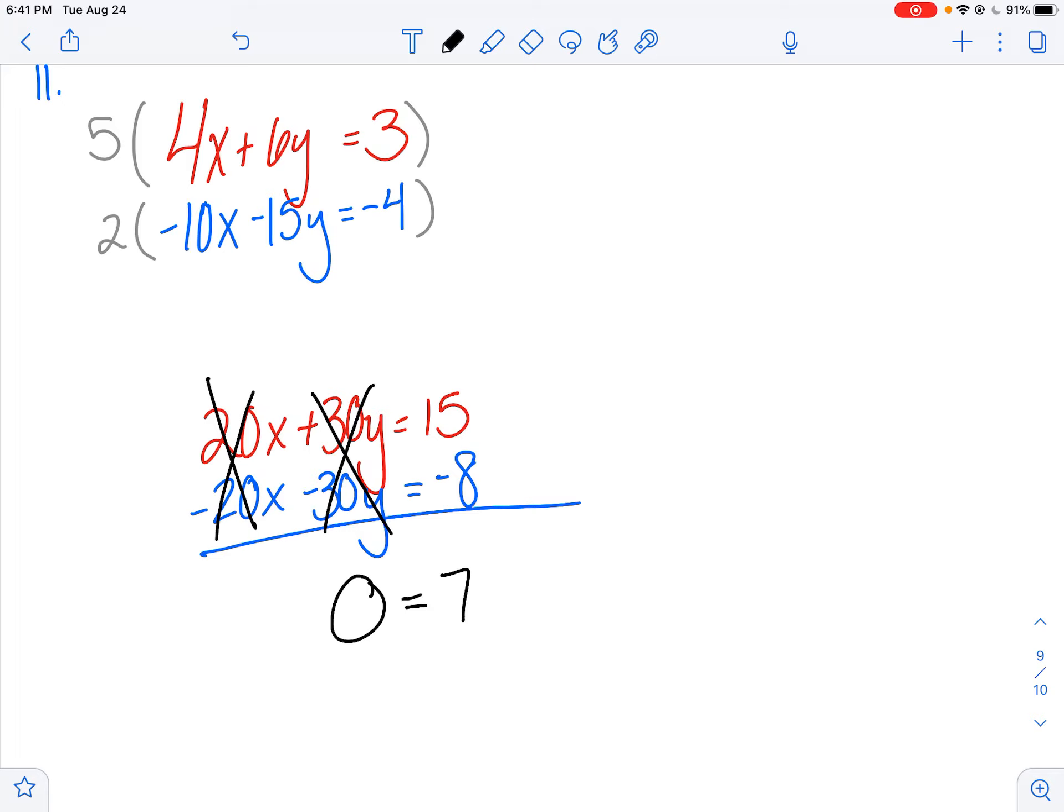Okay. So I have 0 equals 7. And I know I haven't done anything incorrectly. So I got my opposite or inverse coefficients. They reduced to 0 for x and y. But now I've got 0 equals 7. So this is a false statement.